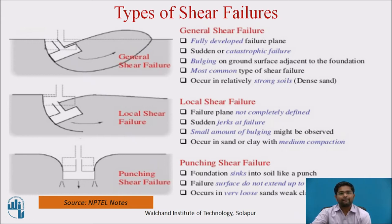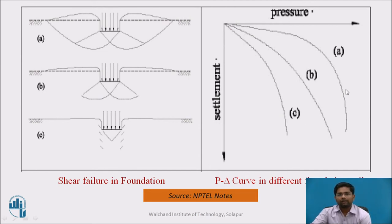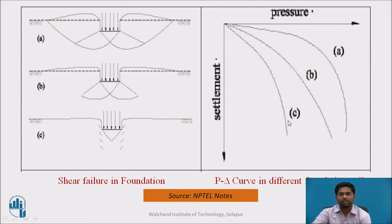In this figure, there is a first zone, second zone, and third zone. The first triangular zone indicates the active zone, passive zone, and shear zone. The right-side figure shows a pressure versus settlement curve: A is related to general shear failure, B is related to local shear failure, and C is related to punching shear failure. In general shear failure, the soil takes a high amount of pressure and less settlement; in punching/local shear failure, less load is taken and high settlement occurs.